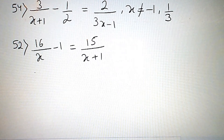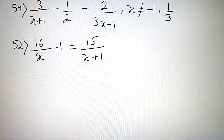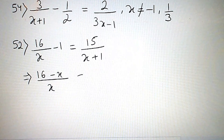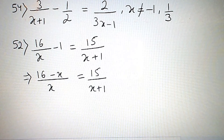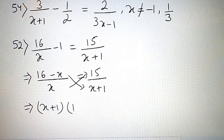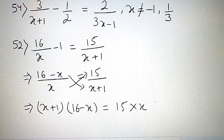Question number 52 is: 16 by (x minus 1) is equal to 15 by (x plus 1). Now, we can write as — first of all, we take LCM. So, 16 minus x is equal to 15 by (x plus 1). Now, we do cross multiplication. So, (x plus 1) into (16 minus x) is equal to 15 into x.